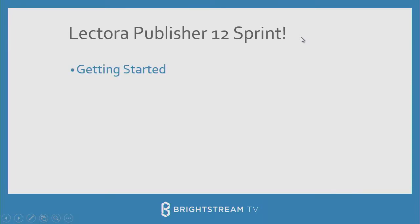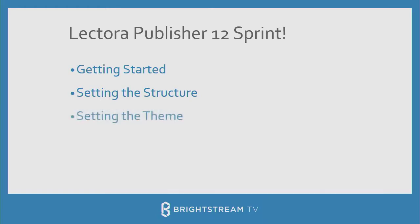Today for this sprint, we're going to get started with the fundamentals — take a look at the interface, get our bearings, and start a file. We'll take a look at the structure of a Lectora Publisher course, which is really critical. I'm going to spend a lot of time looking at something called inheritance, which plays a big part in making sure your file is correct in regards to navigation and functionality. We'll also look at setting up a theme and start building out some pages, and we'll look at publishing and getting this project out the door.